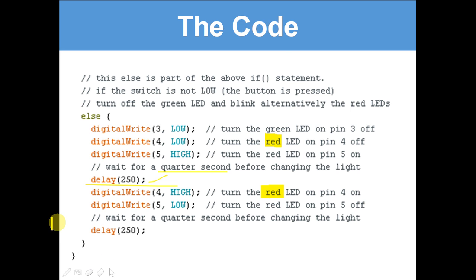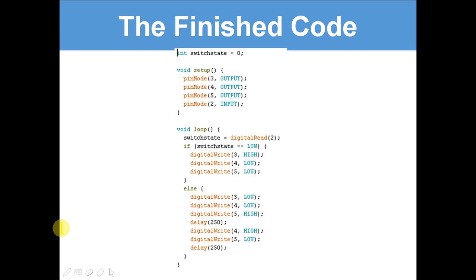delay(250). And then here is the finished code. Let's just quickly summarize what this code is. Integer variable switchState equals 0. That's pretty simple. Void setup.